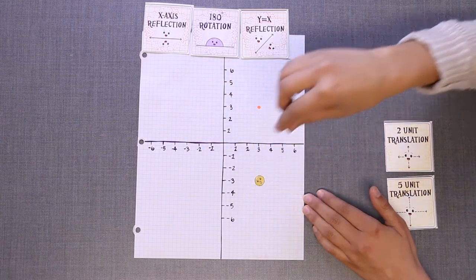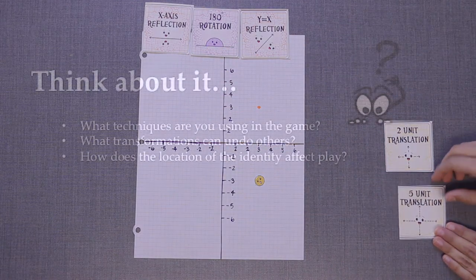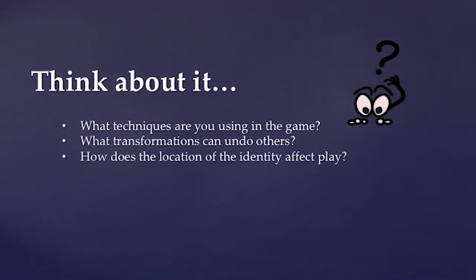Here are some questions to think about while playing or after play. What techniques are you using in the game? What transformations can undo another? How does the location of the identity affect play?